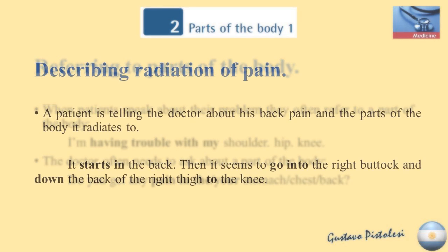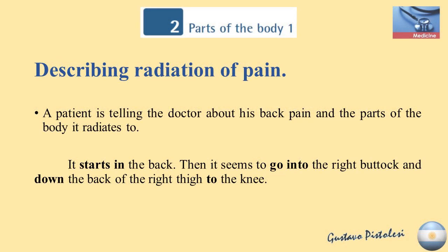Describing radiation of pain. A patient is telling the doctor about his back pain and the parts of the body it radiates to: "It starts in the back, then it seems to go into the right buttock and down the back of the right thigh to the knee."